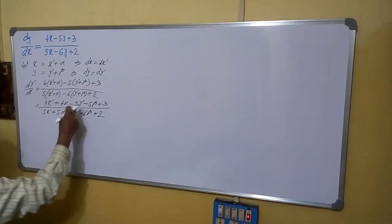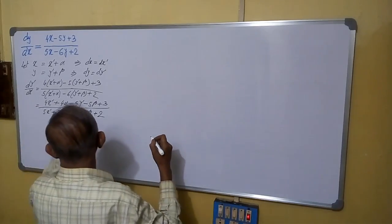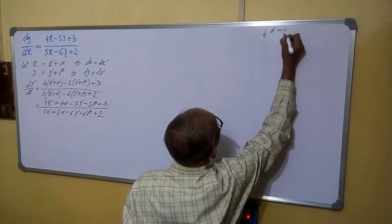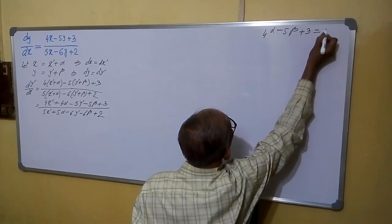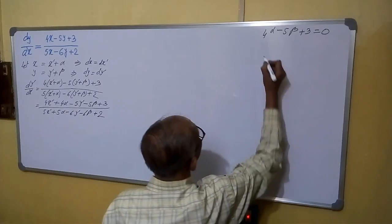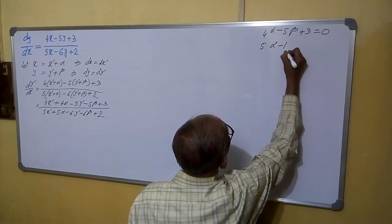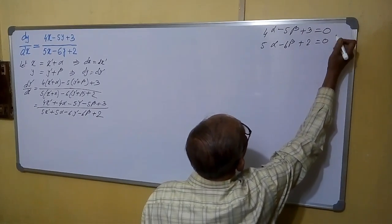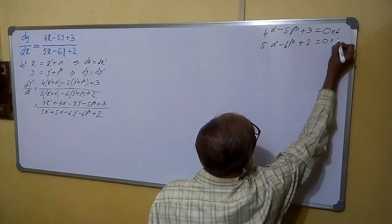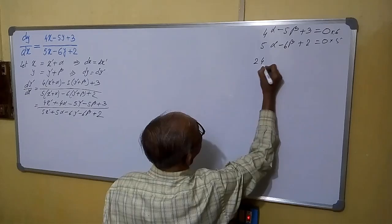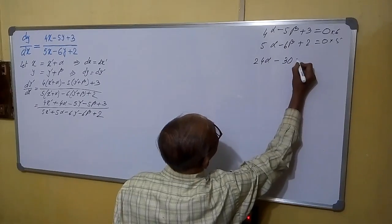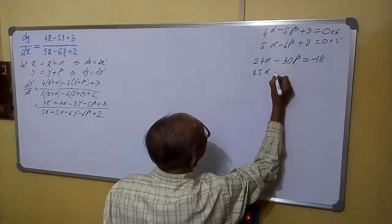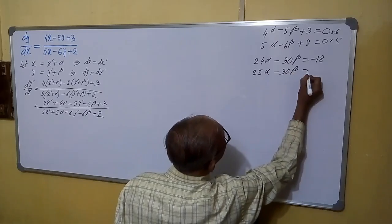If we are removing the constant terms from the numerator and denominator, we set: 4 alpha minus 5 beta plus 3 equals to 0, and the denominator constant term gives 5 alpha minus 6 beta plus 2 equals to 0. Multiplying the first equation by 6 and the second by 5: 24 alpha minus 30 beta equals minus 18, and 25 alpha minus 30 beta equals minus 10.